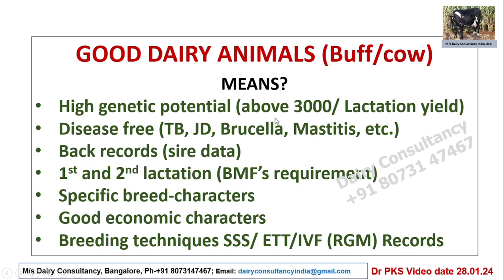A good dairy animal has high genetic potential — at least above 3,000 liters lactation yield — and is disease-free from TB, Johne's disease, brucellosis, and mastitis. It should have back records of the mother and father's performance and be in its first or second lactation for BMF requirements. Any farmer can buy animals up to the fifth lactation, but the BMF requirement is specifically first and second lactation only. The animal should have specific breed characteristics and good economic trait records, and the breeding technique used — whether AI, sexed semen, or embryo transfer — should be documented.